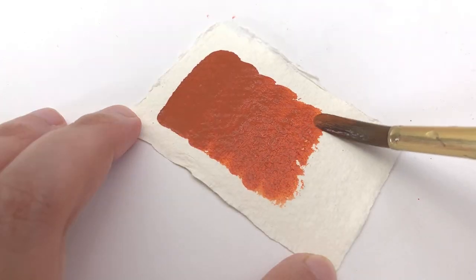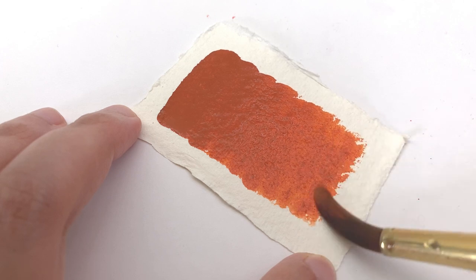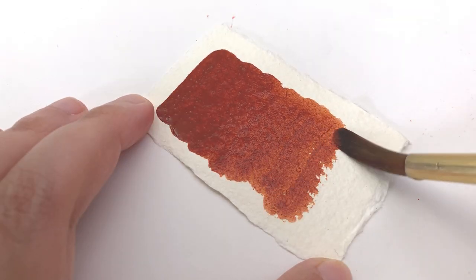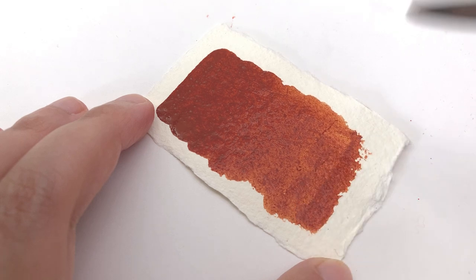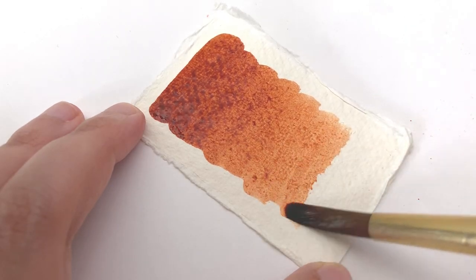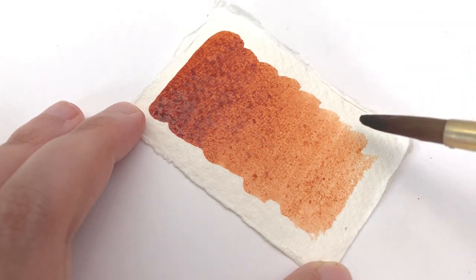Mars Orange Deep made with PR101, Burnt Sienna Natural made with PBR7, and Transparent Brown Oxide made with PR101.